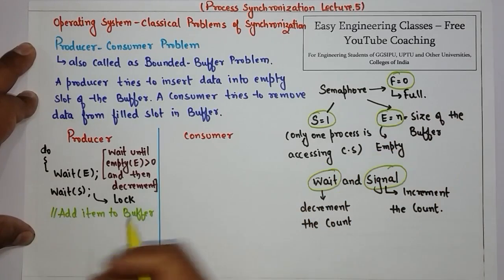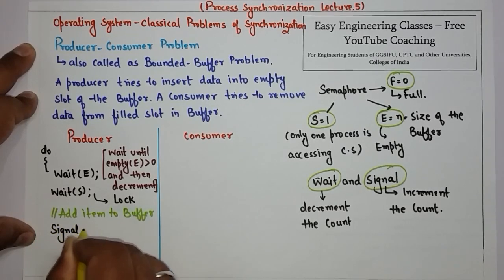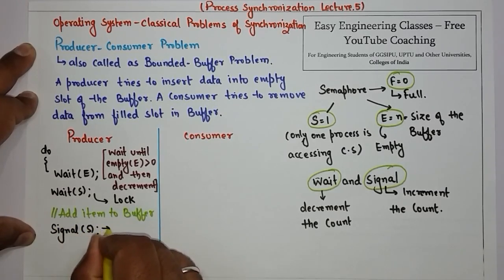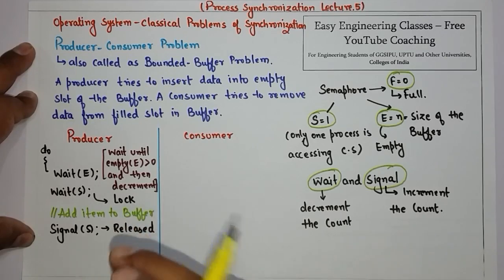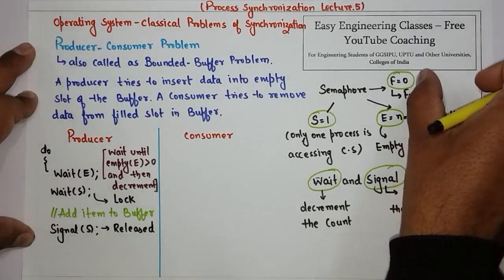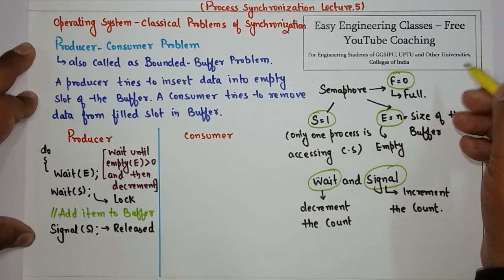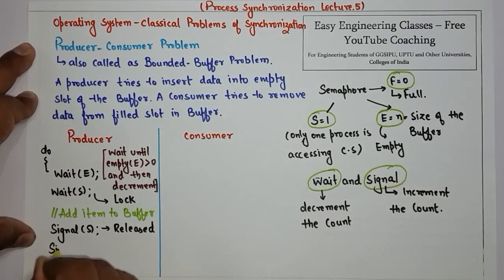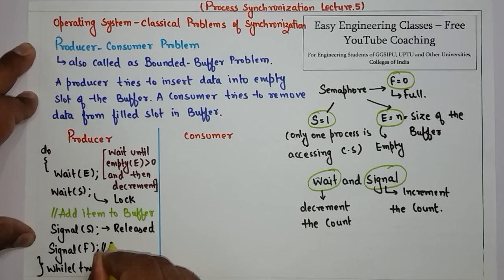This wait is for acquiring the lock. Then in the critical section, the producer can add an item to the buffer. Once the item is added, we need to release the lock, so we issue signal S — the lock is now released. Then we also need to increment the value of F, because when a producer adds some item in the buffer, the full count is also incremented. So we issue signal on semaphore F to increment full.